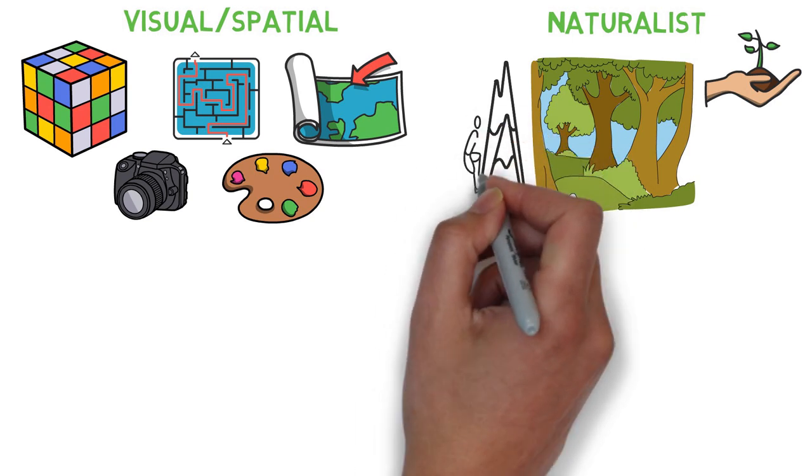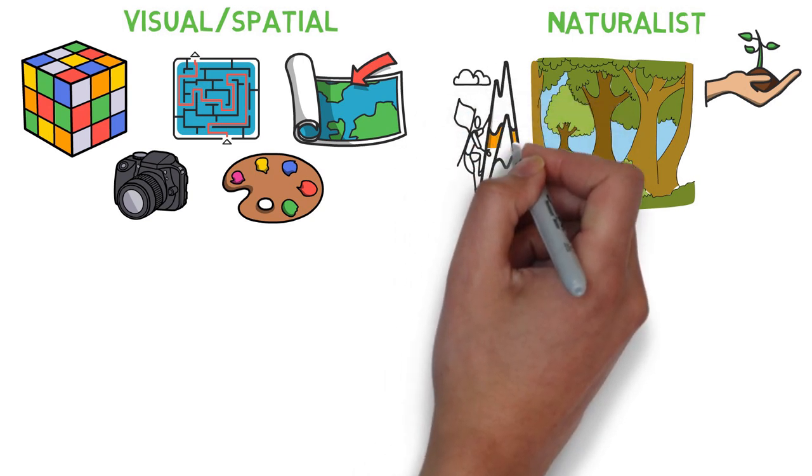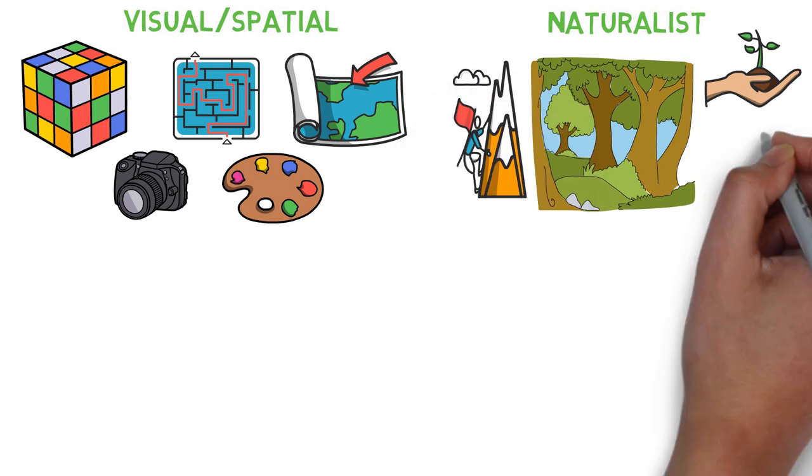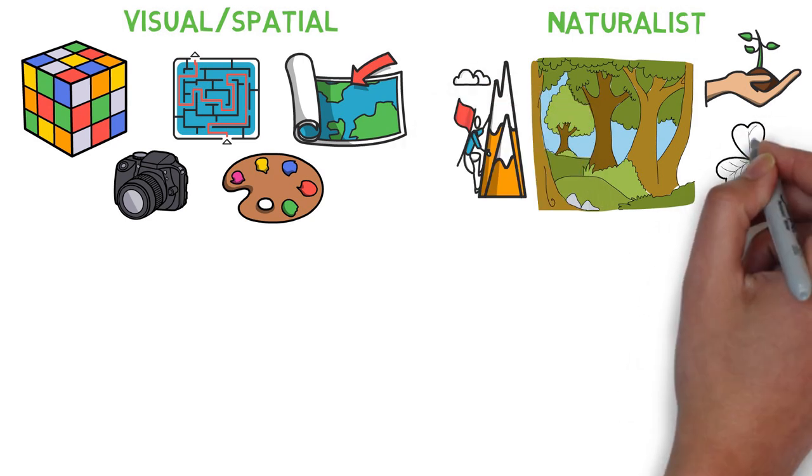These people may excel at surviving in the wild. For instance, farmers, breeders, veterinarians, chefs, horticulturists have high levels of naturalist intelligence.